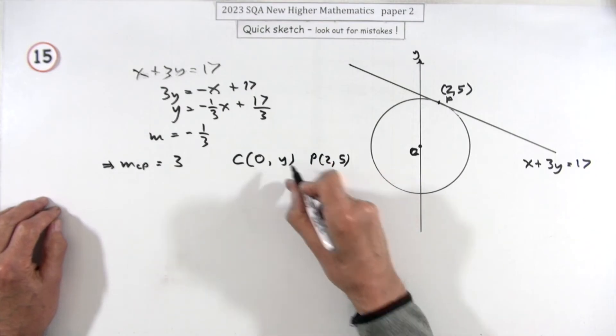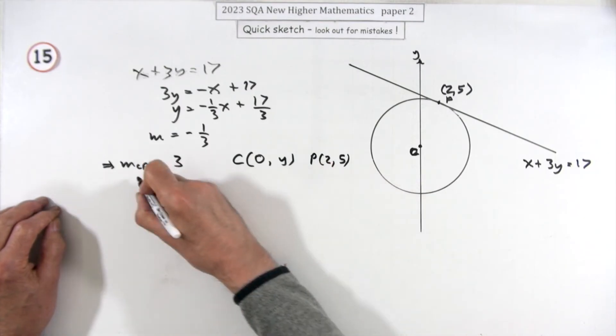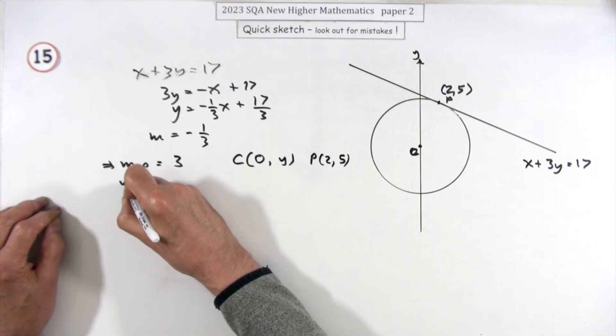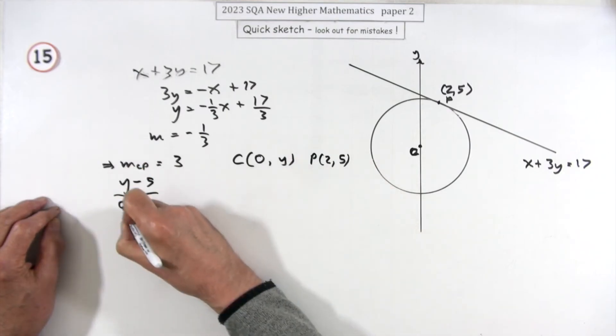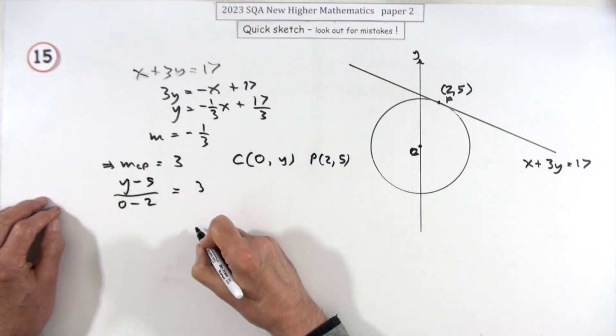So the gradient, I'll do it this way around. So if the gradient of CP is three, that means that y minus the y coordinate over x minus the x coordinate should come to three. Just solve that equation then.